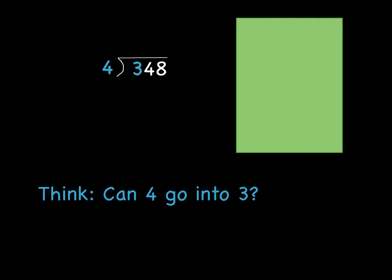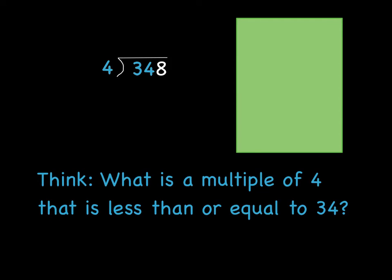Just like any long division problem, I'm going to think, how many times can my divisor go into my dividend? Or in this case, how many times can 4 go into 3? Well, 4 can't go into 3. So now I'm going to include the next digit, which is a 4, and make my dividend 34, and say how many times can 4 go into 34.